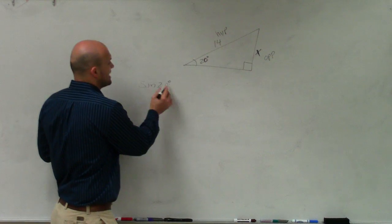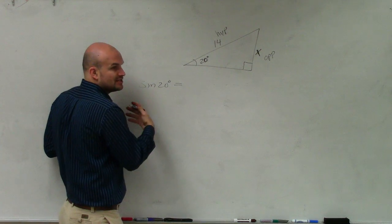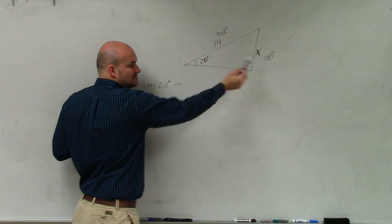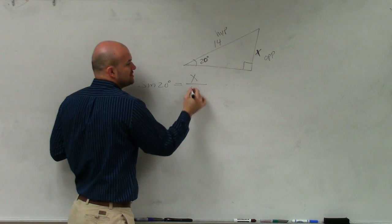So now, what I can say is the sine of 20 degrees is equal to the opposite over the hypotenuse. Do we know what the opposite is? It's x over the hypotenuse, which is 14.